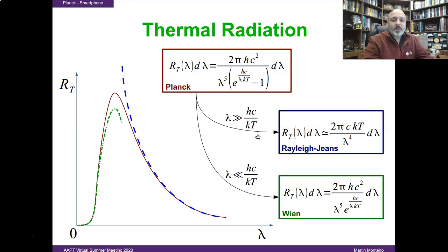If the wavelength is large, then Planck's law could be approximated by the Rayleigh-Jeans equation. On the other hand, if lambda, the wavelength, is small, then Planck's equation could be approximated by Wien's equation.